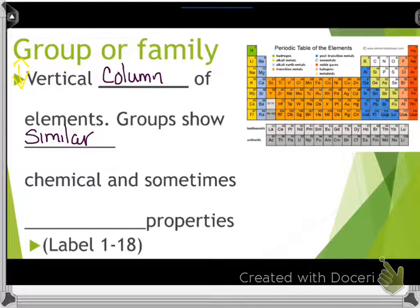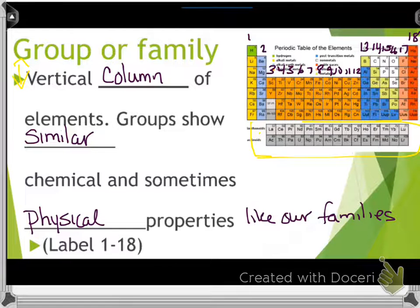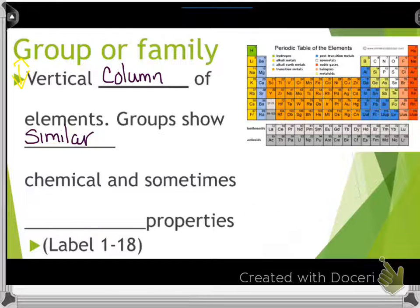All right, group or family. This is the opposite. You have a vertical column of elements, and vertical is up and down. The vertical column is like this. The way to remember vertical is different from horizontal is, if you're vertically challenged it means you're short like me, and vertical is up and down. Columns hold buildings up, so hopefully that helps you differentiate those in your head.